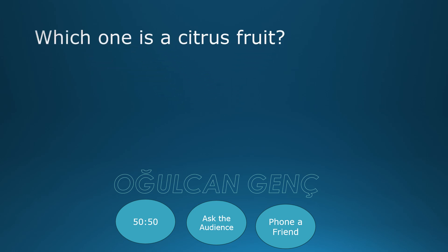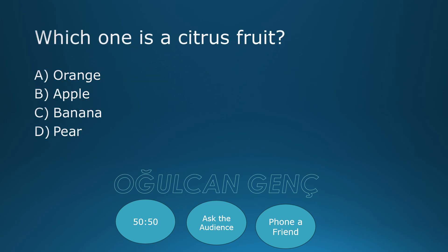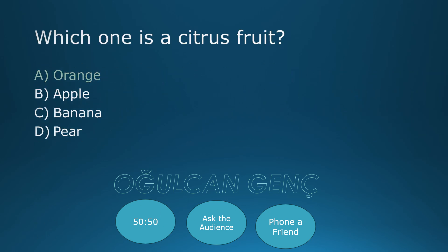Which one is a citrus fruit? Orange, Apple, Banana, Pear. Correct answer is Orange.